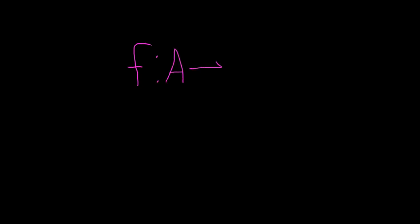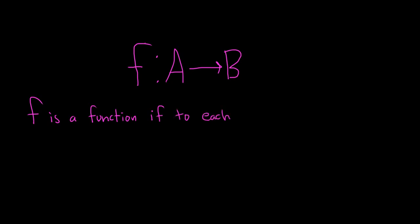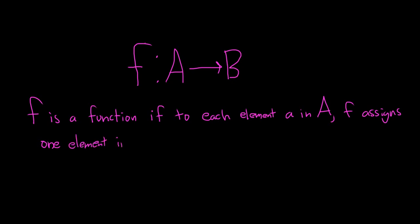Hi everyone. In this video we're going to talk about function notation. So we have a function which we'll call f from A to B. The definition of a function is the following: f is a function if to each element — A here is a set, so its members are elements — so to each element, let's say little a in A, f assigns one element and only one, so one element in B.